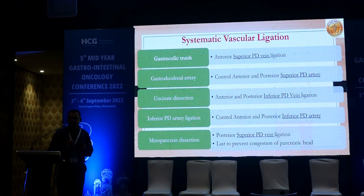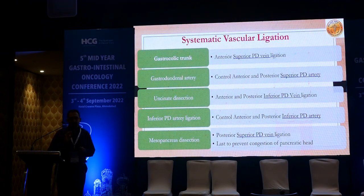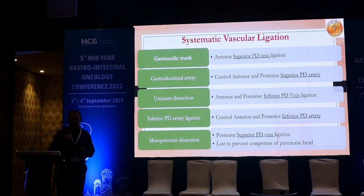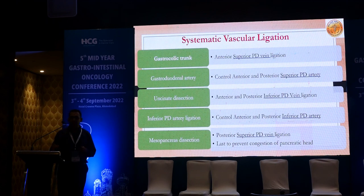Systematic vascular ligation during MIPD is very important. First, you ligate the gastrocolic trunk of Henle, which takes care of the anterior superior PD vein. Next is the gastroduodenal artery, taking care of the anterior and posterior superior PD artery. Then during uncinate dissection, the anterior and posterior inferior PD veins are ligated sequentially, then the inferior PD artery, and finally after dissection of the whole mesopancreas, the posterior superior PD vein is the last vein to divide.